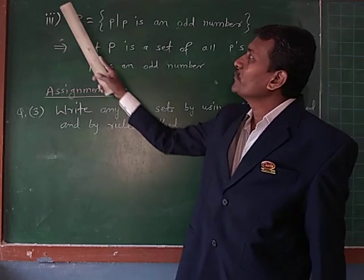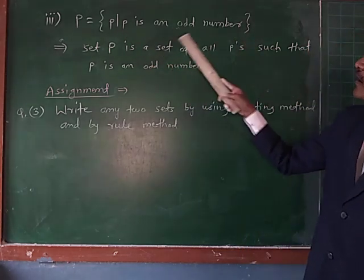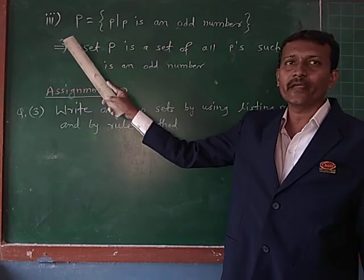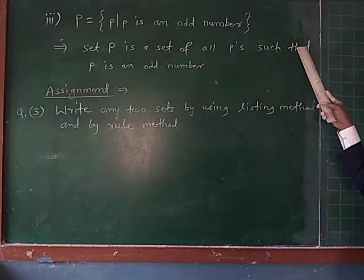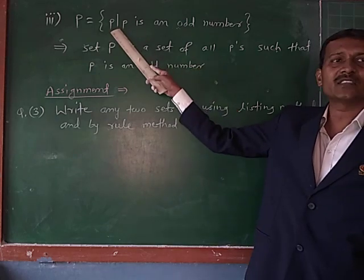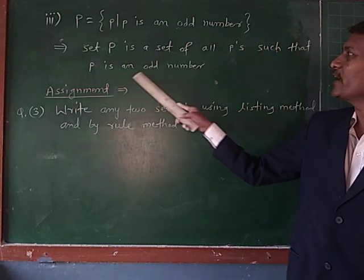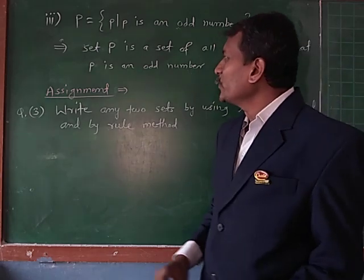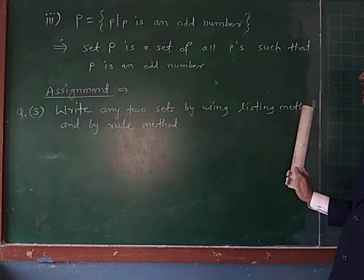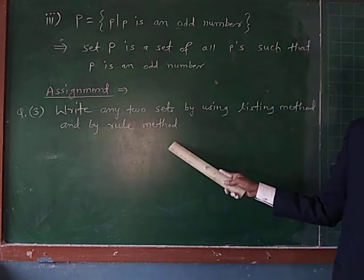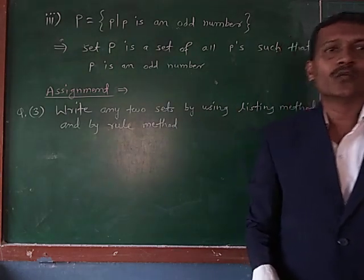Example number 3: P = {p : p is an odd number}. Write this example in words. The answer is: Set P is the set of all p's such that p is an odd number. The vertical line means 'such that'. Then the assignment for you — question number 3: Write any two sets by using listing method and also by rule method. Thank you.